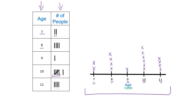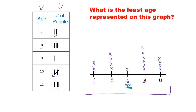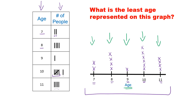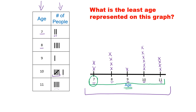Now let's look at some questions we can answer using a line plot. The first one: what is the least age represented on this graph? This is where a misconception comes in. A lot of people see the word 'least' and look for the X's that are the least, and say nine years old is the least. But the question is asking what is the least or minimum age represented. So we look at the ages — 7, 8, 9, 10, and 11 — and the smallest or minimum age is 7. The least age represented on this graph is 7 years old.